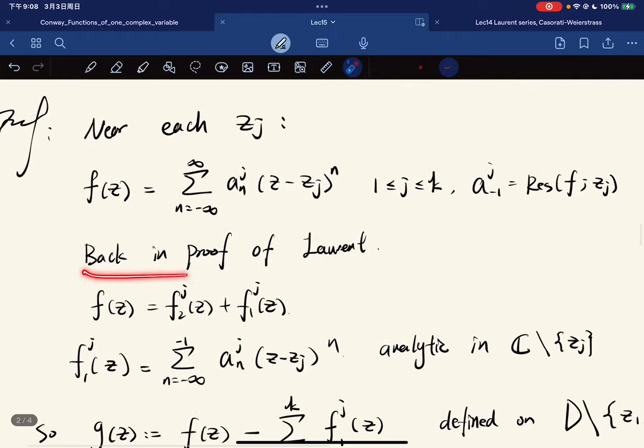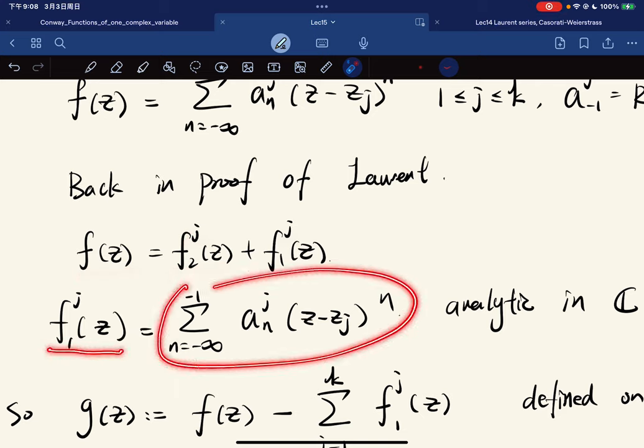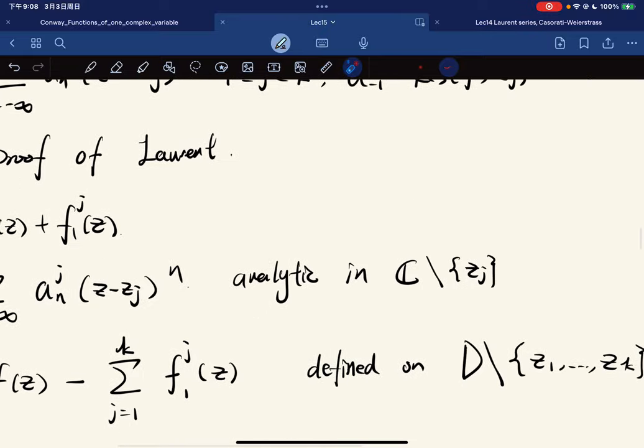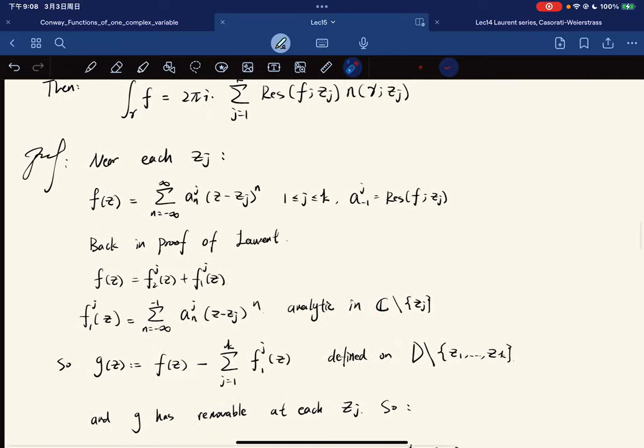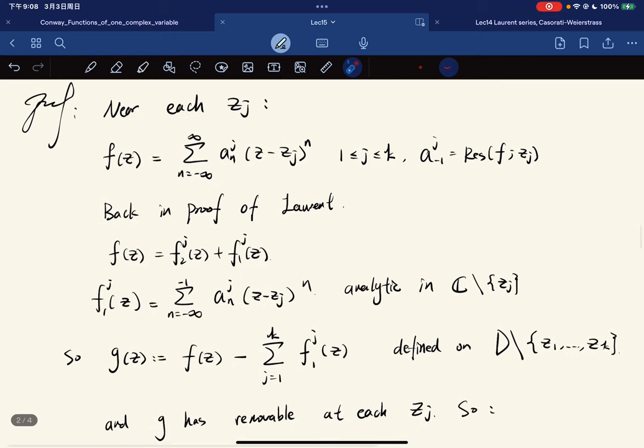And back in the proof of Laurent, we have that fz is equal to f2 plus f1, right? For each z, where f1z is equal to this, which is analytic in C but not zj. Okay, so this is what we have back in the proof of Laurent.